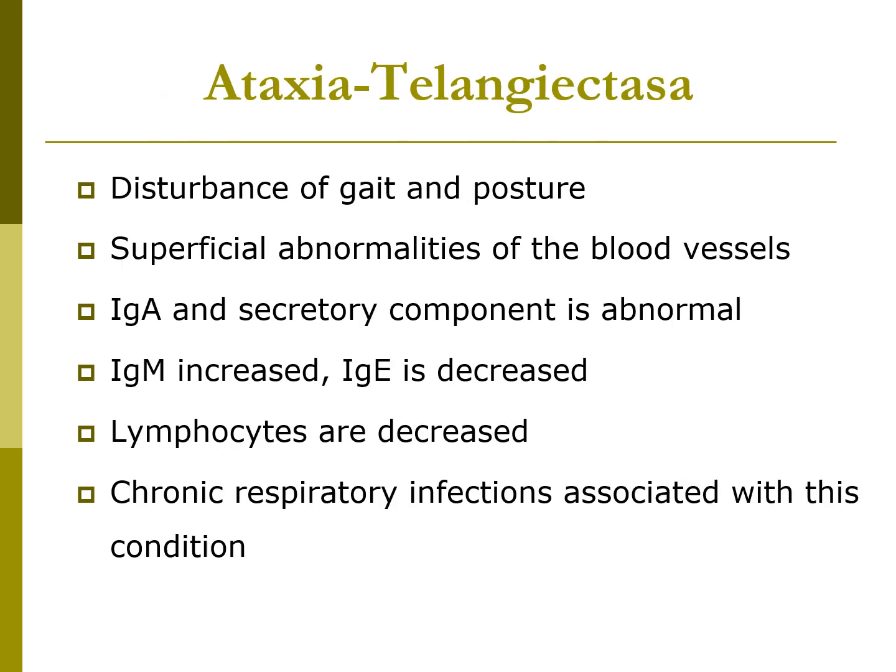Ataxia telangiectasia is a neurodegenerative inherited disease involving disturbance of gait and posture, where superficial abnormalities of blood vessels occur. IgA and secretory component are abnormal, leaving patients at risk for respiratory diseases. IgM is increased, IgE is decreased, and lymphocytes are decreased. Chronic respiratory infections are associated with this condition. Ataxia means lack of muscle coordination, and telangiectasia means dilation of the small blood vessels. Injections of gamma globulin may help treat this disorder.